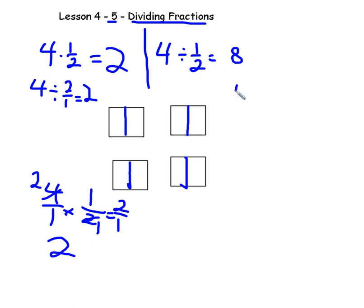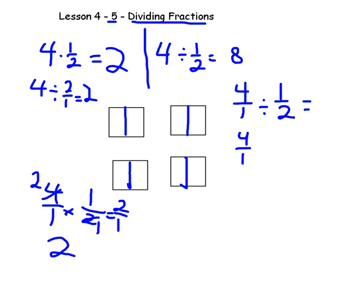Multiplication-wise, what we're doing is saying 4/1 divided by 1/2. That's a bit of a challenge, but we can write it as a multiplication problem, because multiplying fractions is no big problem — multiply the top by the top and the bottom by the bottom. The inverse operation of 4/1 divided by 1/2 is 4/1 times 2/1, or 2, and we get 8/1, or 8.